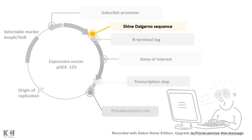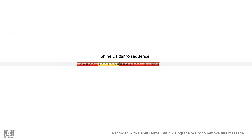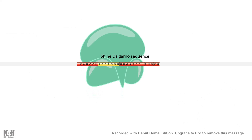Now let's talk about the Shine-Dalgarno sequence. When the vector is expressed inside the cell and mRNA is produced, that mRNA needs to bind to the ribosome. This ribosome binding requires the Shine-Dalgarno sequence, which interacts with a specific 16S rRNA sequence in the ribosomal small subunit, allowing ribosome attachment to the mRNA. So the Shine-Dalgarno sequence must also be present in the expression vector.